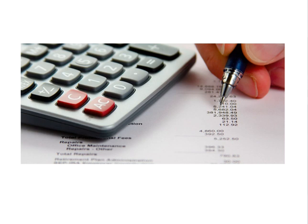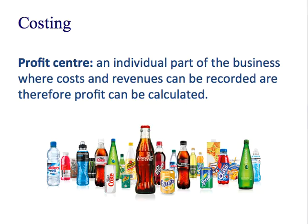Okay, tough section now: costing. Costing is a way of allocating costs, and in particular indirect costs, also known as expenses or overheads. Usually these are fixed costs as well. So a little bit of a recap to the previous presentation on cost centres and profit centres — individual parts of the business where costs and revenue are recorded and therefore profit can be calculated.